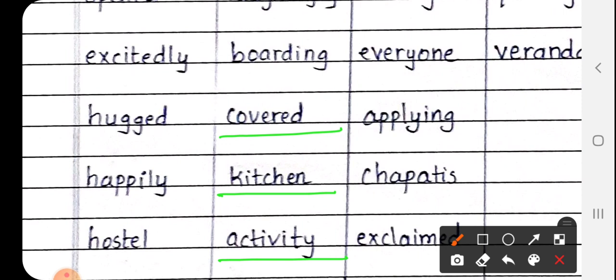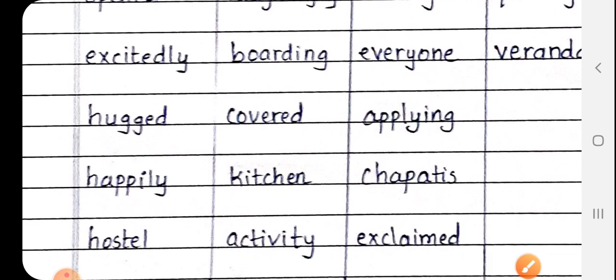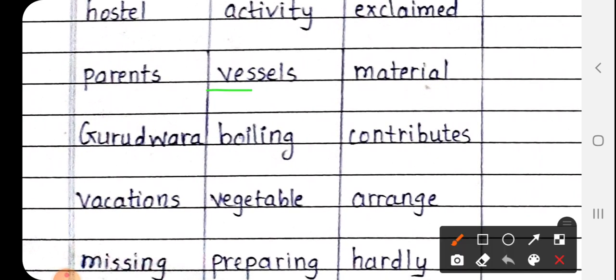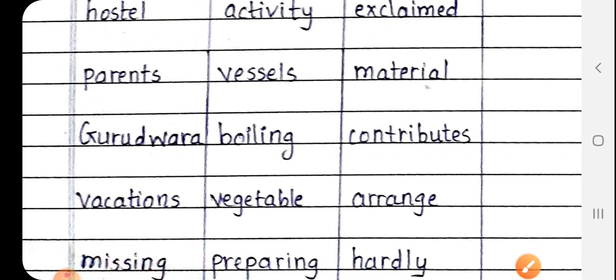Vessels, V-E-S-S-E-L-S. Vessels means bartan. Next boiling, B-O-I-L-I-N-G. Boiling means ubal raha hai. Next is vegetables, V-E-G-E-T-A-B-L-E. Vegetable means sabji.